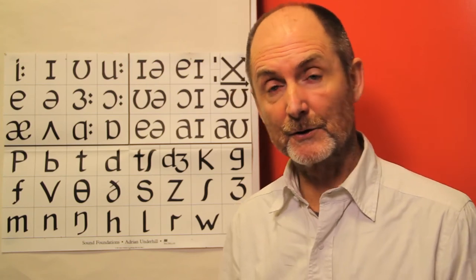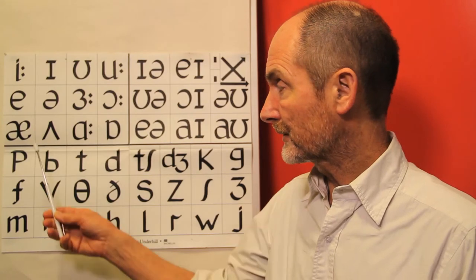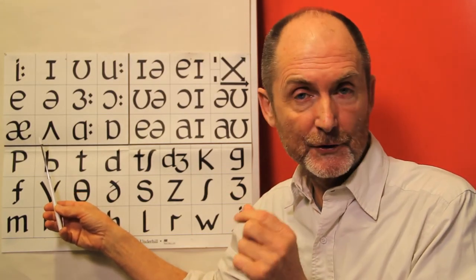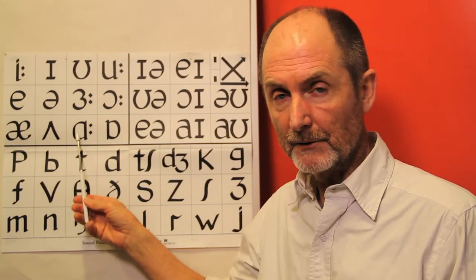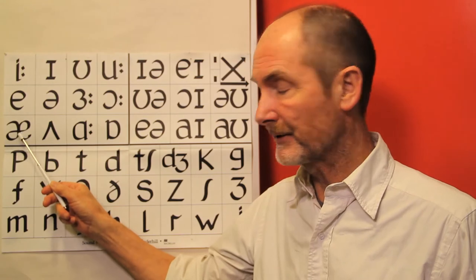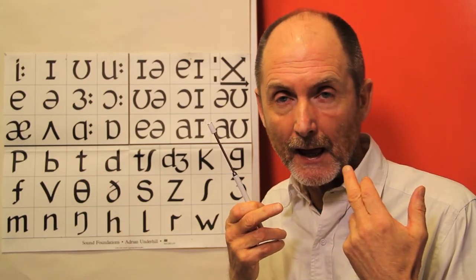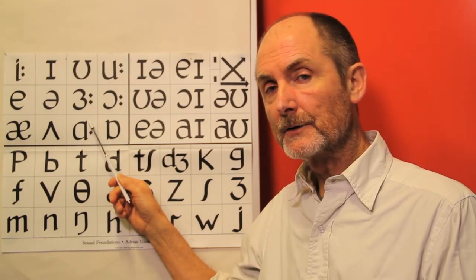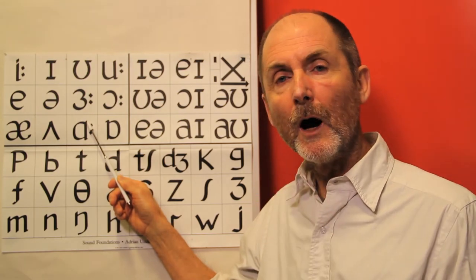In the last two videos we looked at two of the low sounds, that is to say the tongue is low or open, the jaw is open. Both have the jaw open. This one's a front sound, so the lips are quite spread and the tongue is front. And this one the tongue is back and the lips are not rounded but more open.